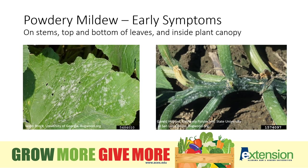Let's learn a little bit more about the early symptoms and signs of powdery mildew. Powdery mildew often shows up inside the canopy first. Look on the bottoms of the leaves, on the stems or other tissues, because if you can diagnose it and detect it early, you're going to be much better able to manage the disease.